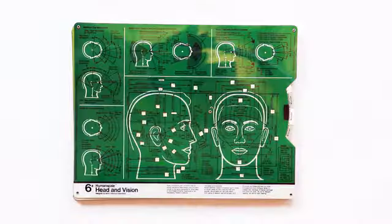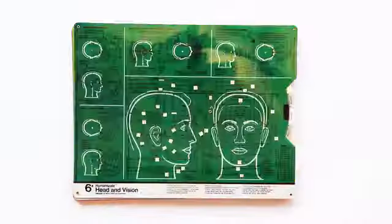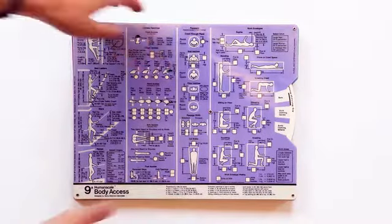Consisting of three booklets and nine selector charts, the human scale manuals are both amazing works of design and useful tools.